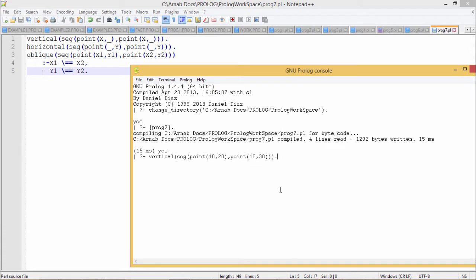To check whether a line segment is vertical or horizontal or oblique, we have written this Prolog program. These are the three clauses we have written.